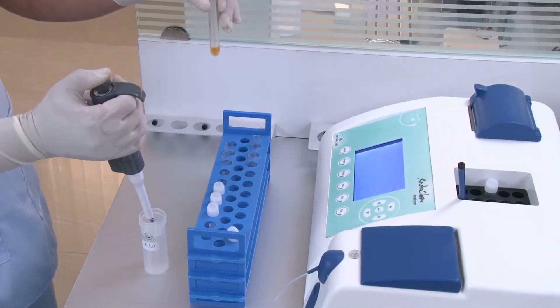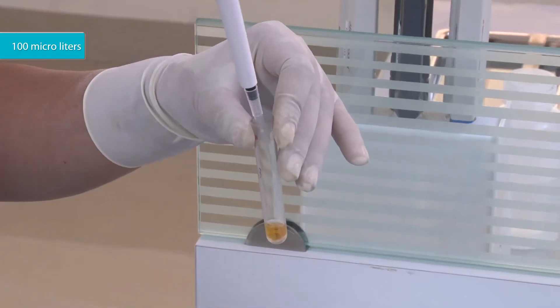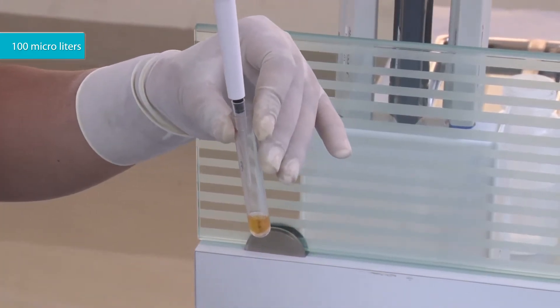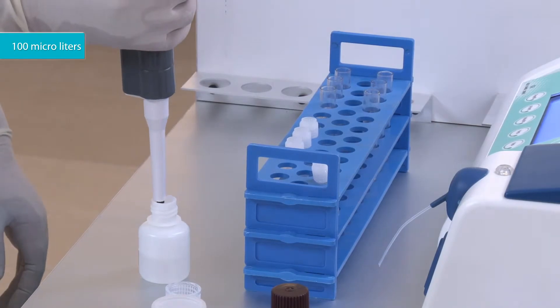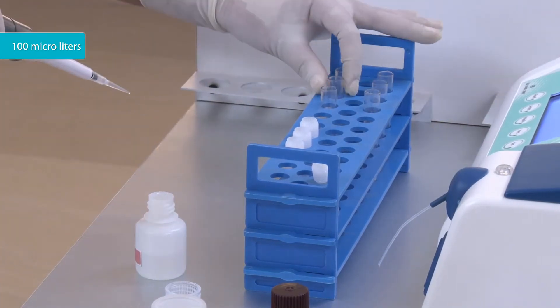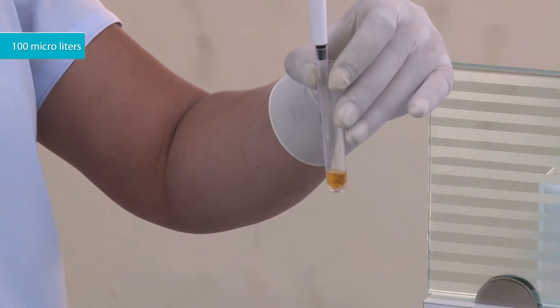Add 100 microliters of normal saline to the tube labeled blank. Add 100 microliters of reagent 3 to the tube labeled standard.